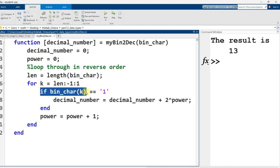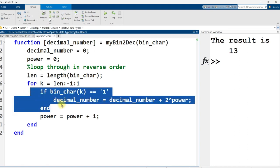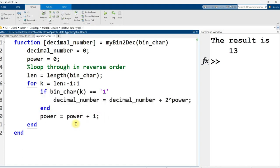And then if the binary character at position k is equal to the symbol one, the character one, well then I add to my decimal number two raised to the current power. And then regardless of whether or not the character was a one or a zero, I increase the power by one. And that's it.